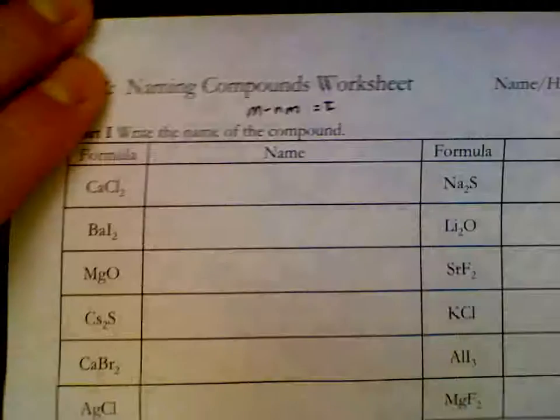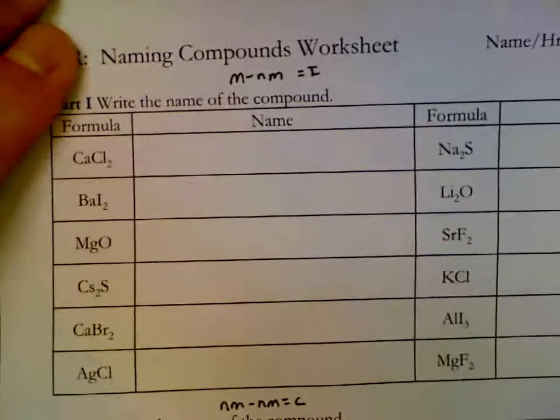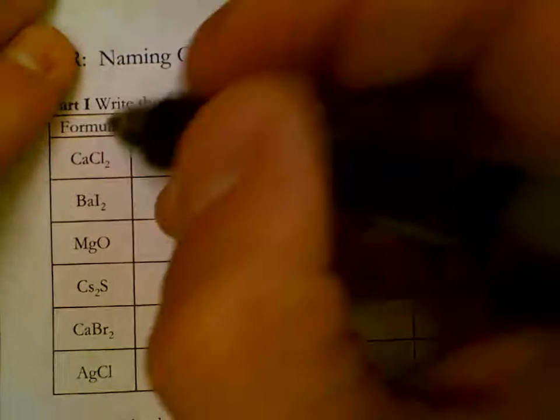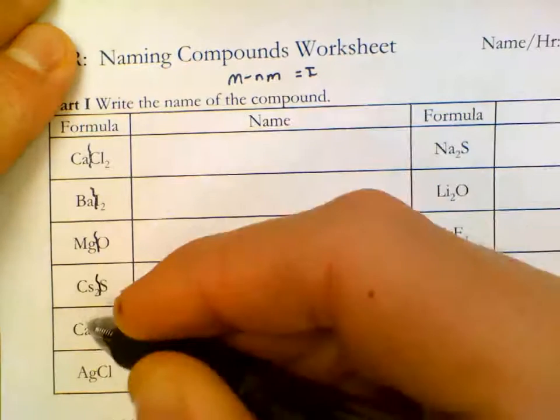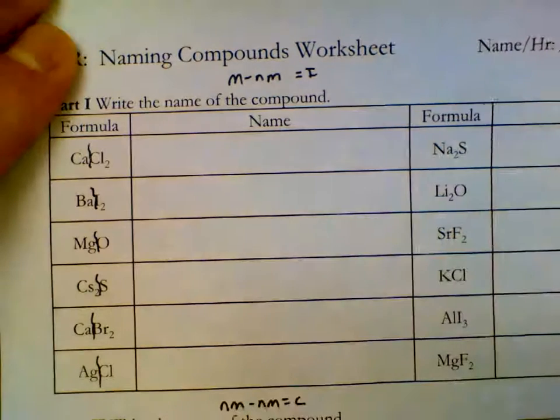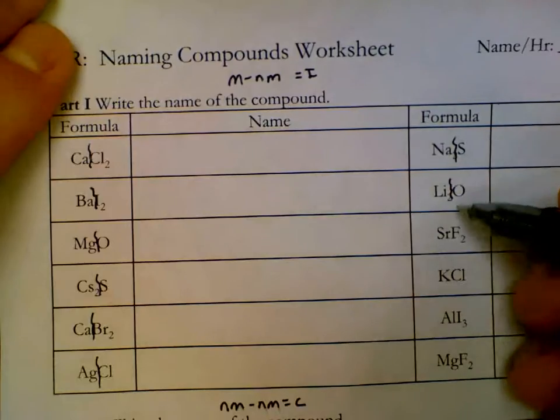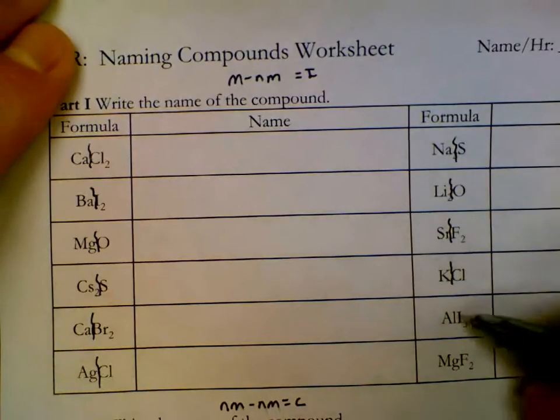So on this top sheet all of the first atoms are metals. That means after the first atom we have an anion. We're just going to name the first atom its full name. The second atom gets an IDE style name, an anion style name.